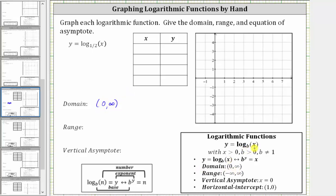And because the output or range for the basic log function is all real numbers, this is also the range for the given function, which using interval notation is the open interval from negative infinity to positive infinity, and the vertical asymptote is x equals zero.